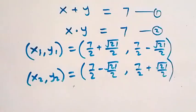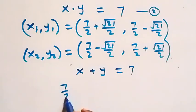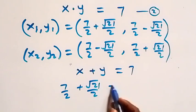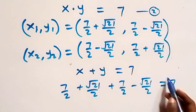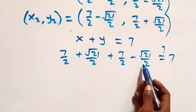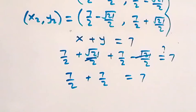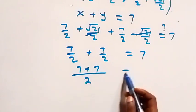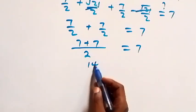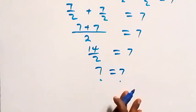From equation one, x plus y equals seven. Substituting the first solution: (seven over two plus root 21 over two) plus (seven over two minus root 21 over two). The root 21 over two terms cancel, leaving seven over two plus seven over two, which is fourteen over two, equals seven. Left-hand side equals right-hand side.